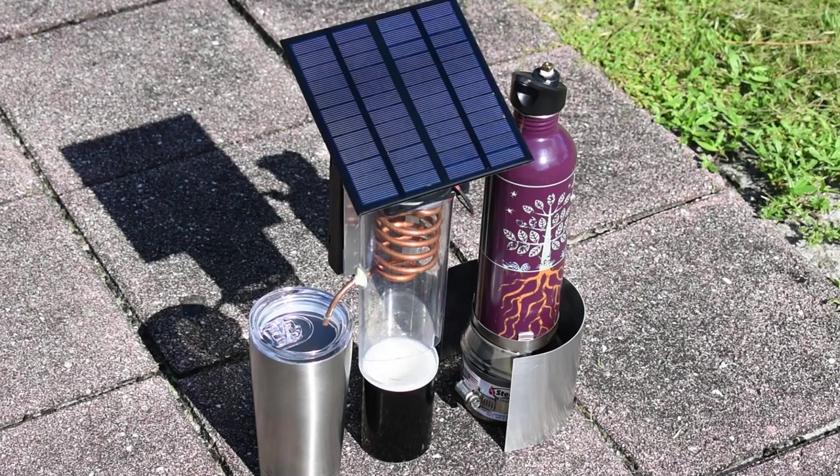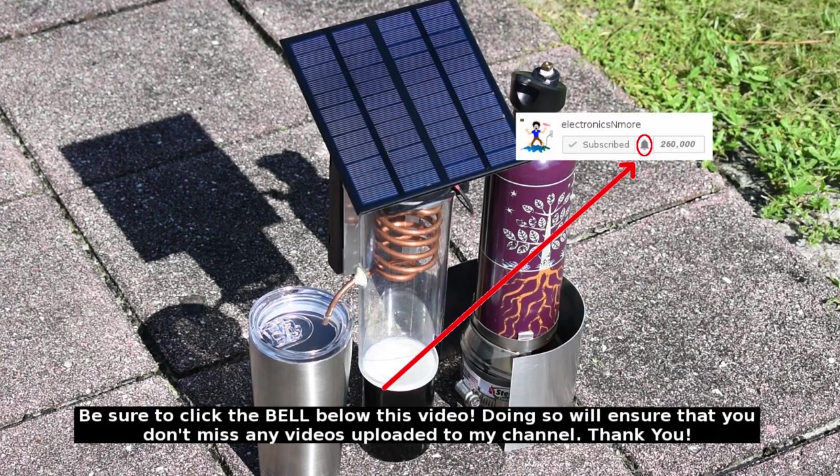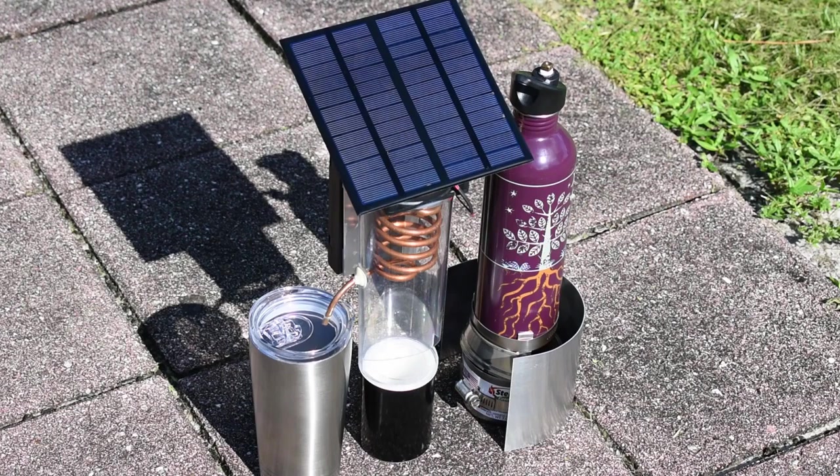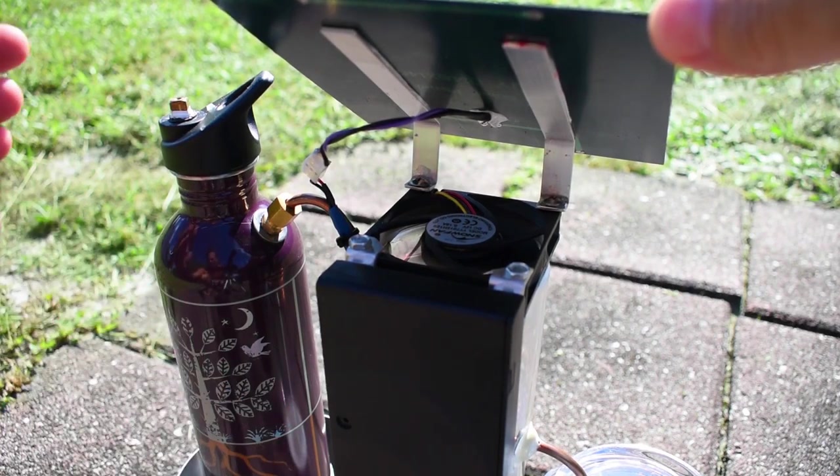We're set up outside with the solar panel facing towards the sun, and the cooling fan is running. What I'm going to do now is get very close to the solar panel with the cooling fan, hold my hand over the panel to show you that the panel is powering the fan. Right now, you can hear the fan running. Take my hand and block the panel.